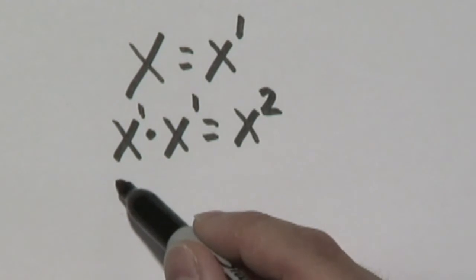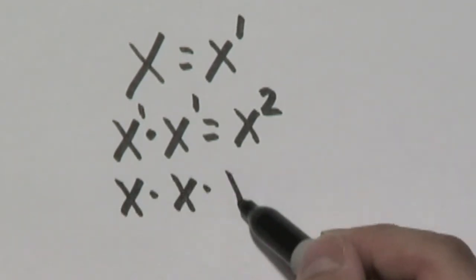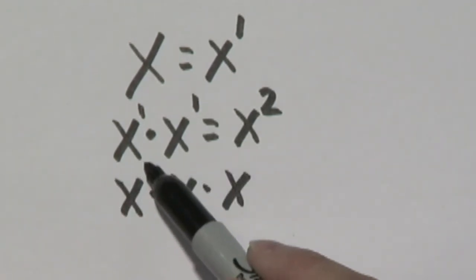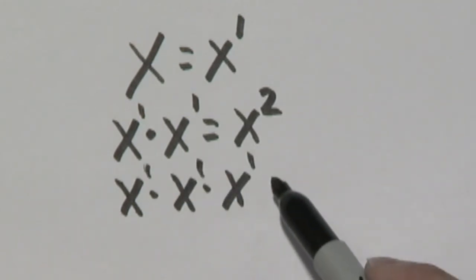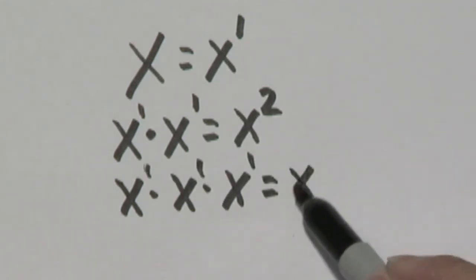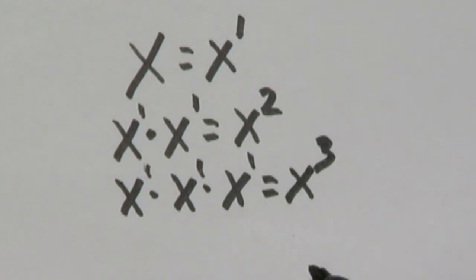Then you can extend the pattern by saying x times x times x, because there's one of each when you're multiplying. To simplify, there would be three of those, or x to the third.